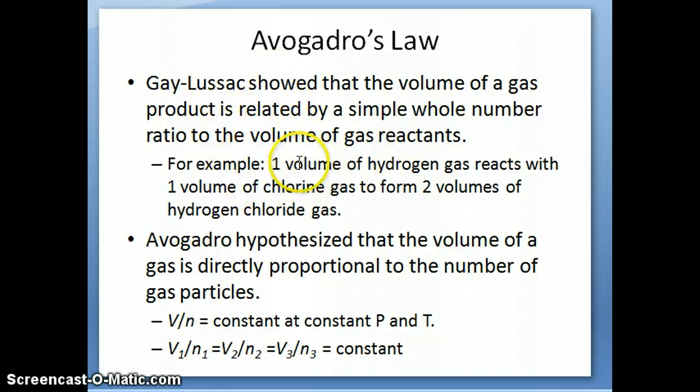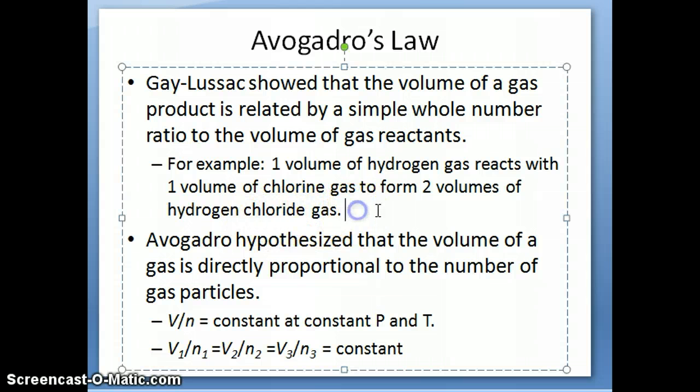This could be illustrated by the following example. At the time, Gay-Lussac did the experiment, he found that if he took one volume of hydrogen gas and mixed it with one volume of chlorine gas, they found two volumes of a new substance, which is also a gas, and that's hydrogen chloride.